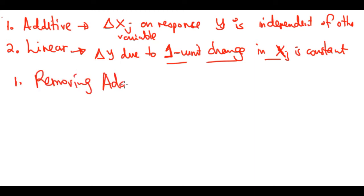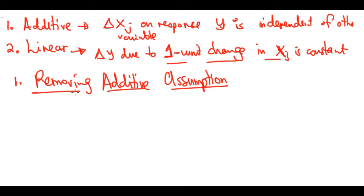In this video we are going to touch on removing the additive assumption; in the next video we'll discuss removing the linear assumption. For our sales and TV budget model, we used a linear model with the additive assumption — meaning we assumed the effect on sales of increasing one advertising budget is independent of the amount spent on other channels.